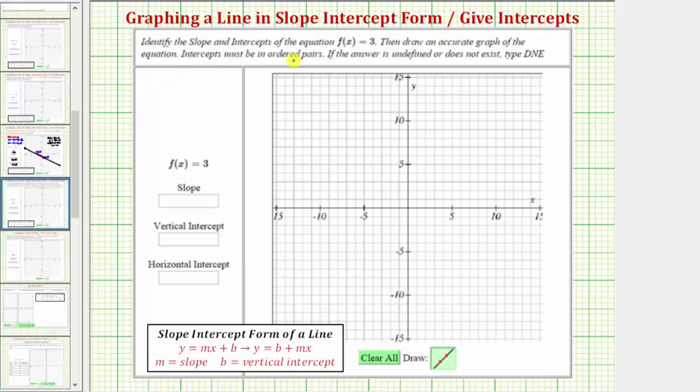We're asked to identify the slope and intercepts of the equation f of x equals three, then draw an accurate graph of the equation. So the first thing to recognize here is that the given function is a constant function.